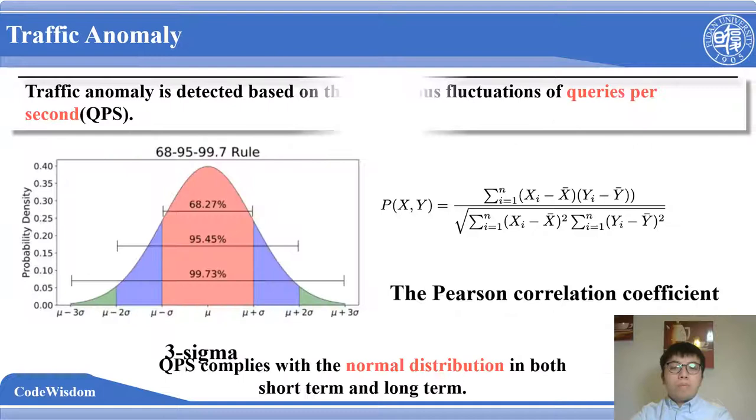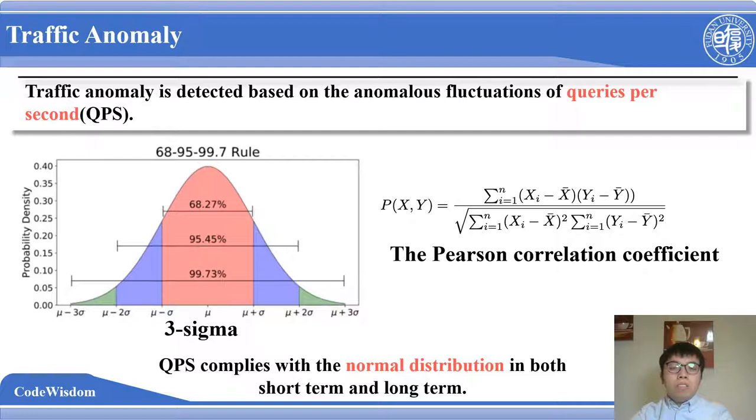Finally, the traffic anomaly is detected based on the anomalous fluctuations of queries per second. We use three sigma to detect the traffic anomaly. This is because QPS complies with normal distribution in both short-term and long-term. To further reduce false positives, we also check the Pearson correlation coefficient between the QPS value and the business metric value of the initial anomaly service.